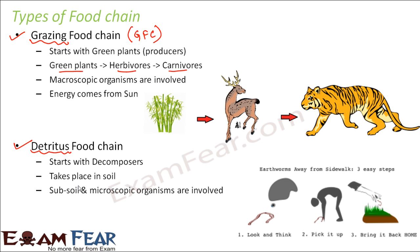In the detritus food chain, microscopic organisms and subsoil organisms are involved. Microscopic organisms like bacteria and fungi are the decomposers, and subsoil organisms like earthworms are also involved — though earthworms are not microscopic, they are subsoil organisms. Earthworms feed upon dead and decaying matter, which is further broken down by bacteria or fungi present in the soil.